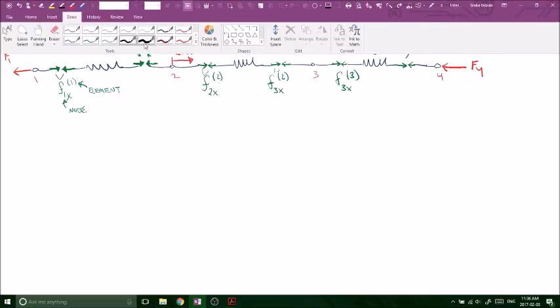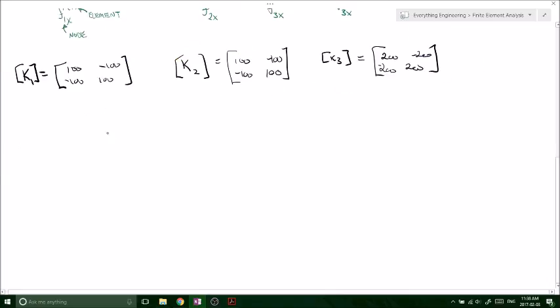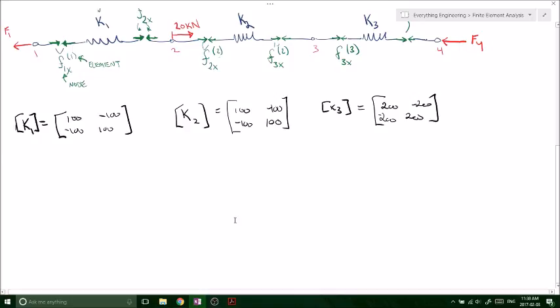The previous video solved for our stiffness matrices, and I'm just going to write them out. I'm not going to bother solving them because you can click back, watch the video, find out how I got those. So here's our three stiffness matrices: K1, K2, K3.